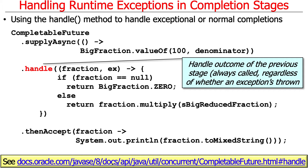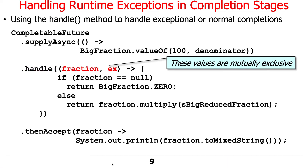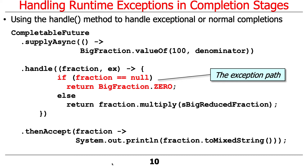One approach is to use the handle method. Handle is an exception handling mechanism that handles the outcome of the previous stage, and it's always called regardless of whether an exception is thrown or not. It takes two parameters — one of which is non-null if things succeed, and the other which is non-null if an exception is thrown. These are mutually exclusive, so only one of them will be non-null at a time. If the fraction was null, that meant an exception was thrown, and in that case we're going to return zero — something went wrong.